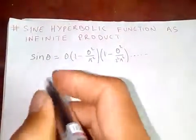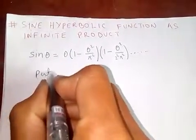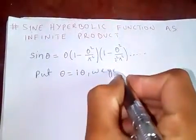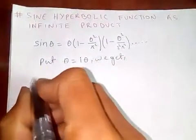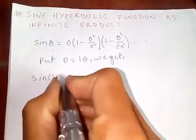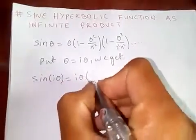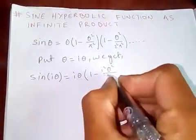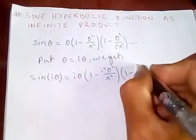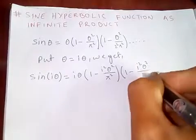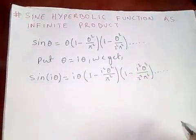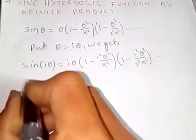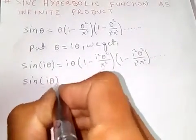Now since we need the hyperbolic form, we replace theta with i·theta. So we get: sine(i·theta) equals i·theta times (1 minus i squared theta squared over pi squared) times (1 minus i squared theta squared over 2 squared pi squared) and so on.